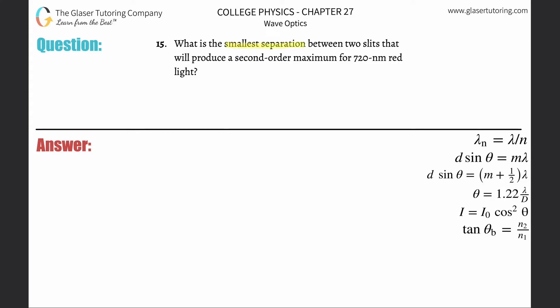Number 15: what is the smallest separation between two slits that will produce a second order maximum for 720 nanometer red light? Alright.